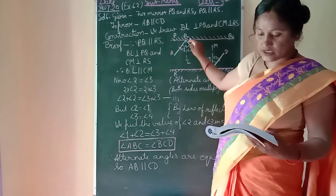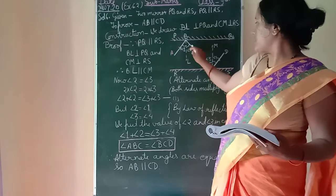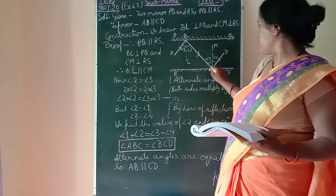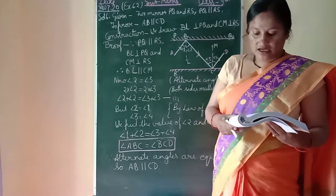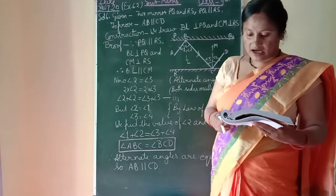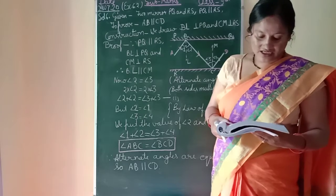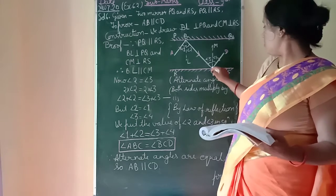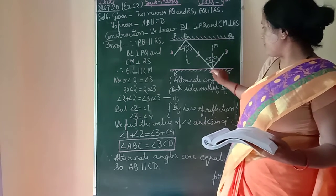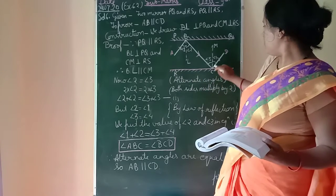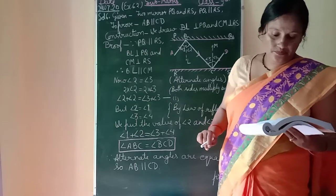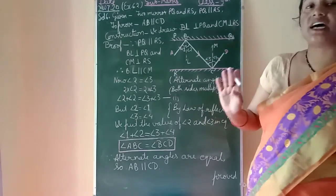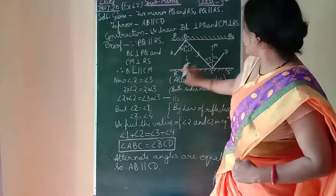The reflected ray moves along the path BC. This ray reflects from mirror PQ and the path is BC. Then the reflected ray BC strikes the mirror RS at C, and again reflects back along CD. We need to prove that AB is parallel to CD.